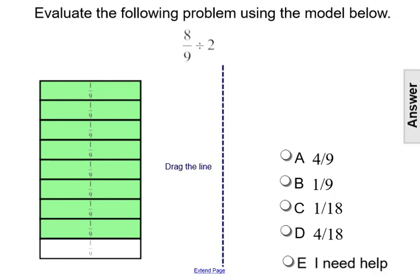If we're dividing that into 2 equal groups, we can use this dashed line. If we place it right down the middle, we've created 2 equal groups.